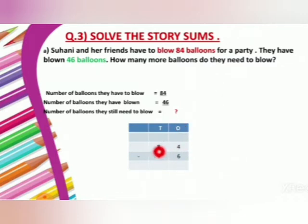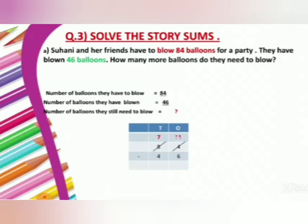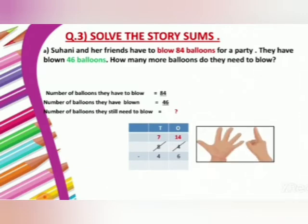Let's start from ones. 4 minus 6 — is it possible? No. So we have to borrow. We will change 8 tens into 7 tens and 10 ones. There are already 4 ones, so now we will make it 14 ones because we have borrowed from tens. Now we have enough ones to subtract. So 14 minus 6 — doing backward counting from 14: 13, 12, 11, 10, 9, 8. So 14 minus 6, your answer is 8.